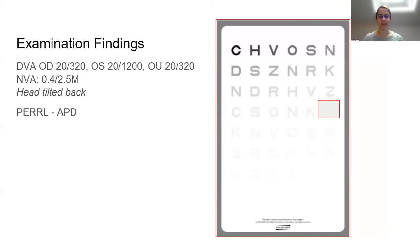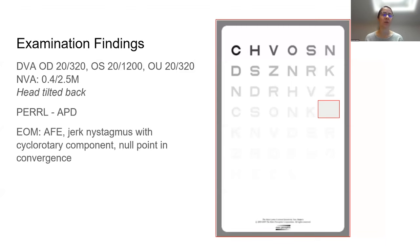Moving on with our exam, we've completed the functional history. Her distance acuities are 20/320 in the right eye, 20/1200 in the left eye, and 20/320 with both eyes together. Her near acuities are 0.4 over 2.5M, and she was observed tilting her head back while reading. Her pupils are normally reactive. Ocular motilities were accurate and full with nystagmus, and she was observed to have a jerk nystagmus with a cyclo-rotary component — a fast and slow phase with a circular movement.